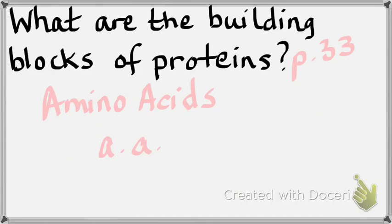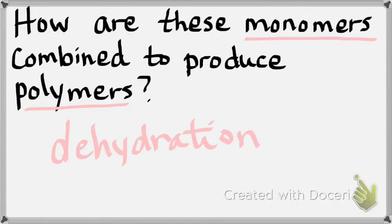For fun, go to page 33. How are monomers combined to produce polymers? The monomers for a protein are amino acids. How are amino acids put together to make big proteins — what kind of reaction? Dehydration. Dehydration is how one amino acid joins with another amino acid to make something larger.